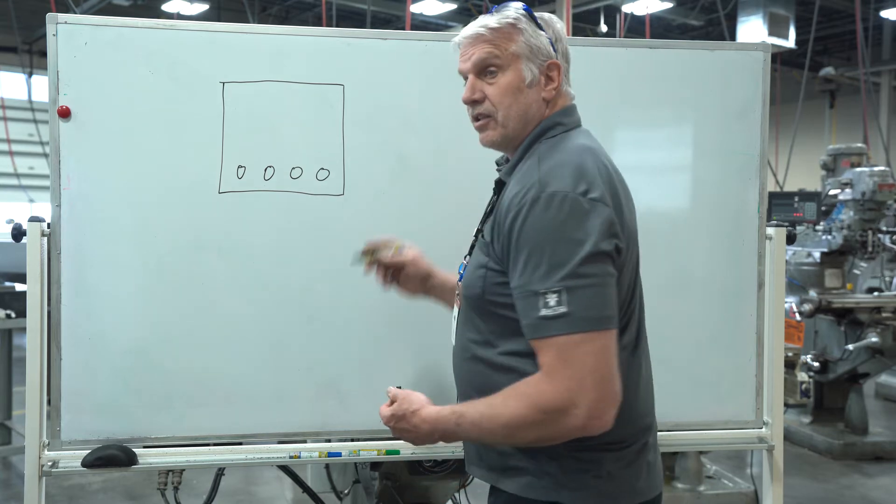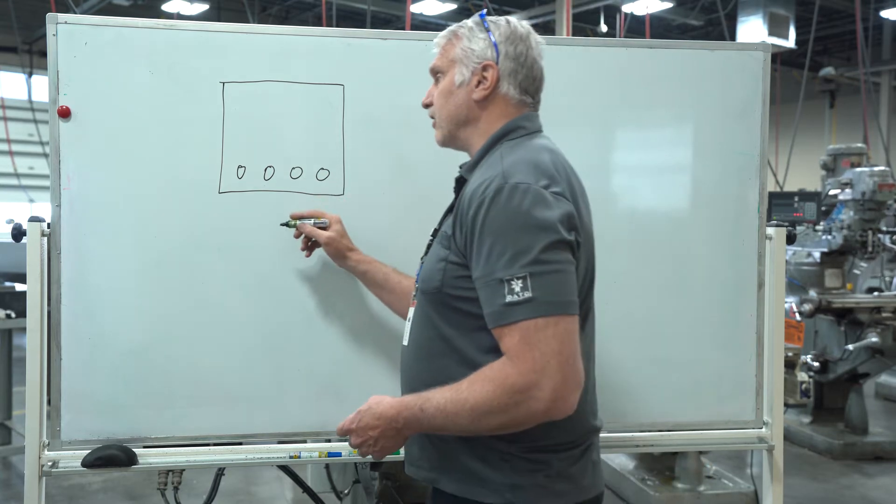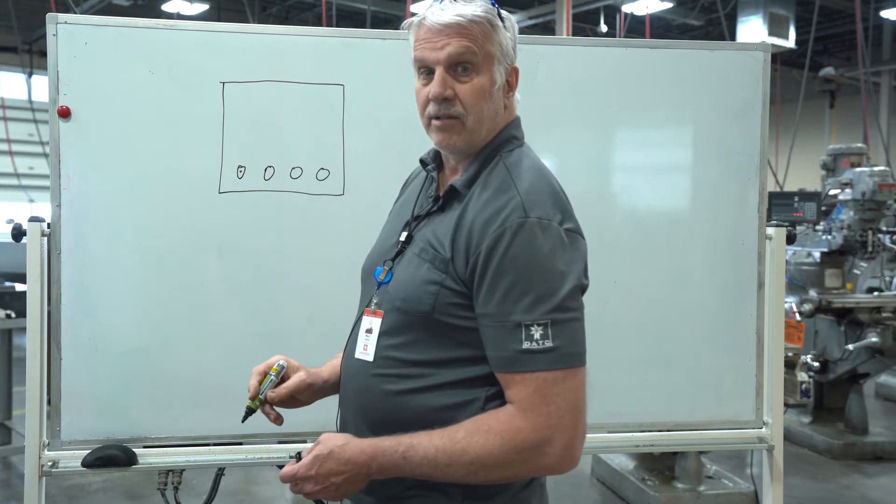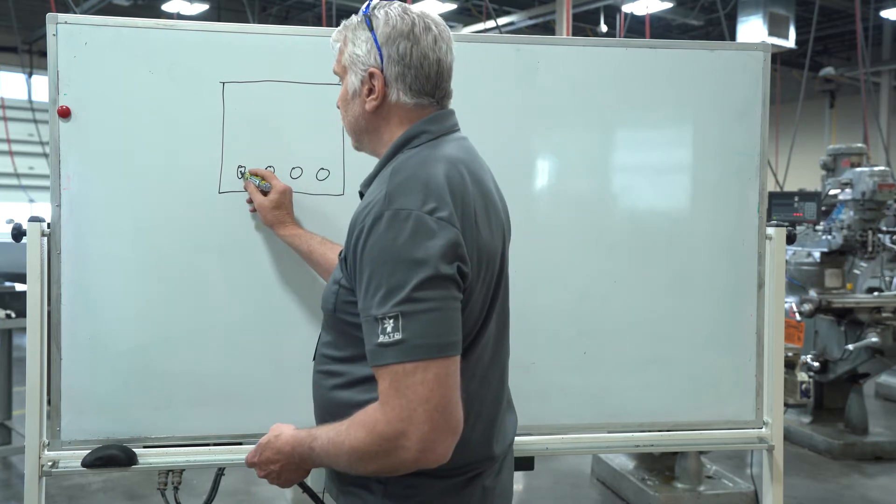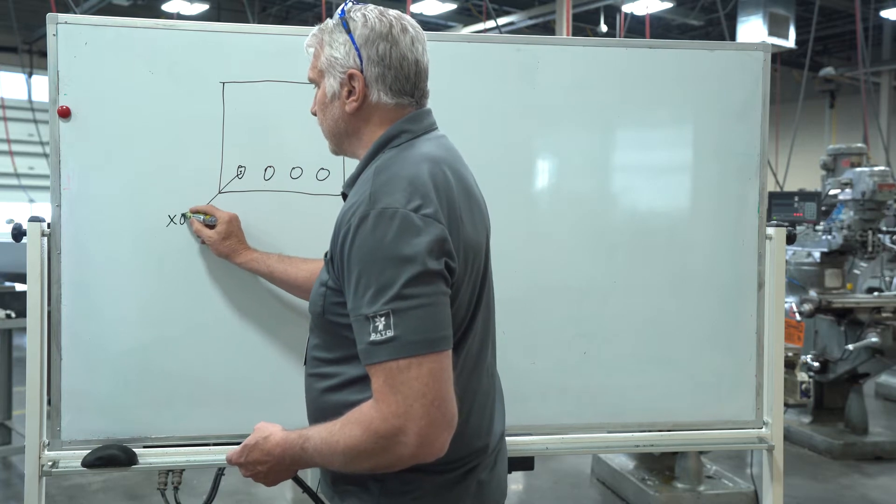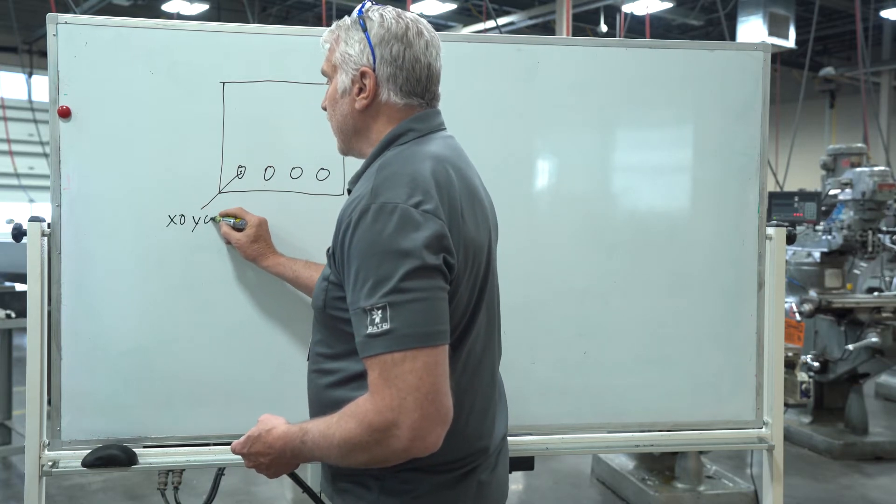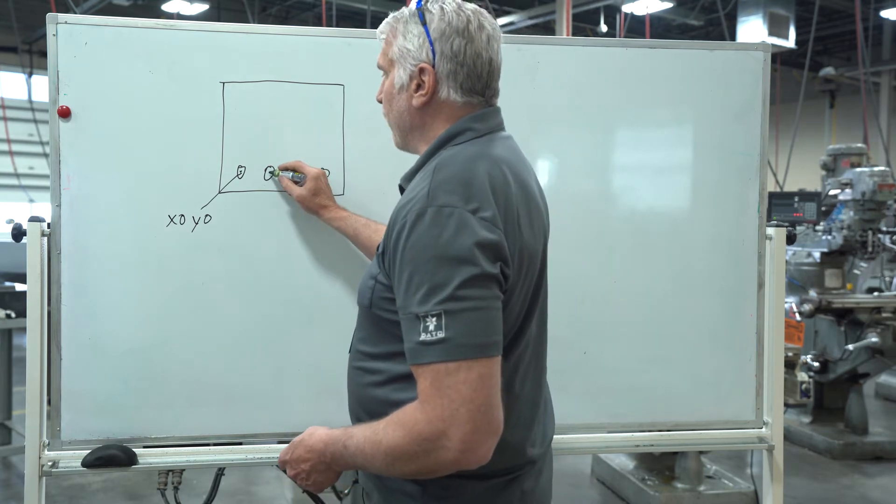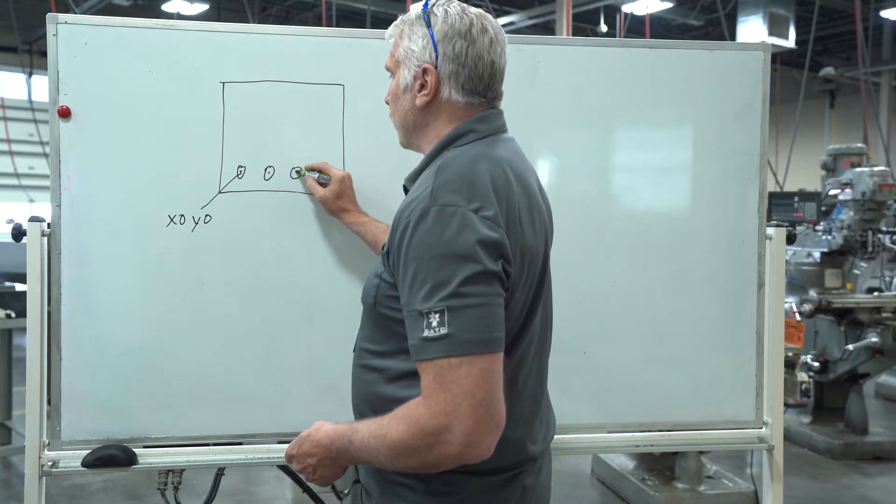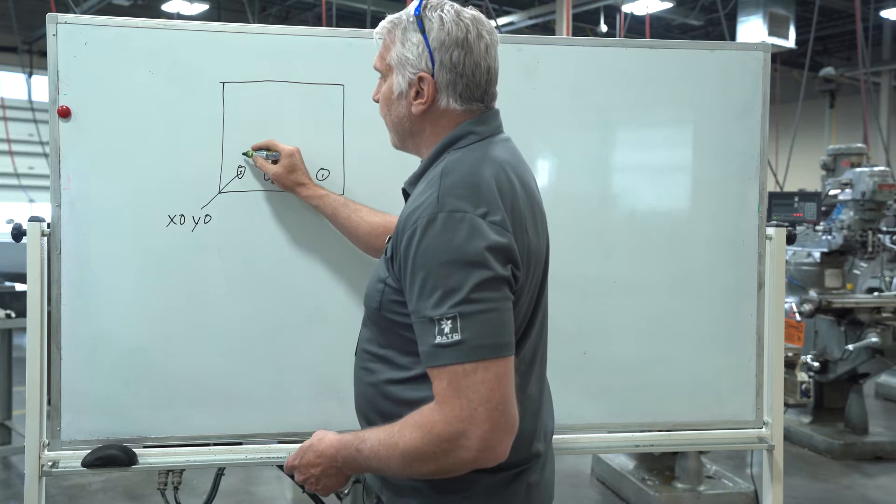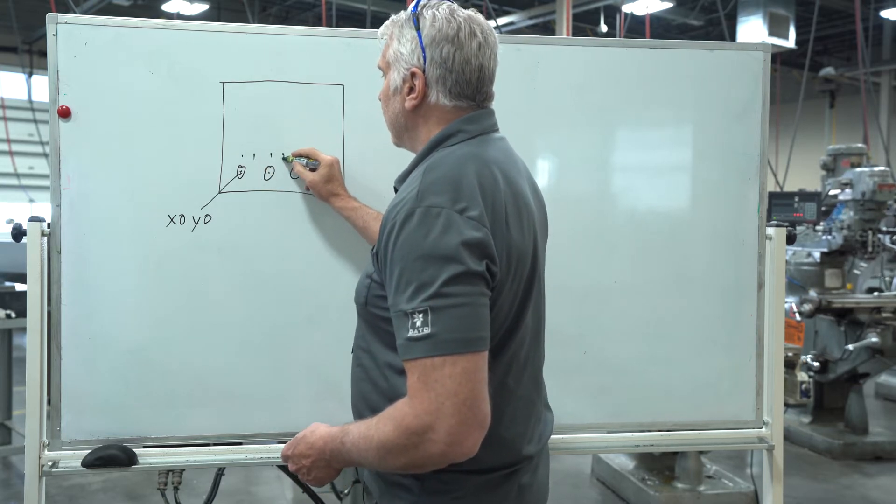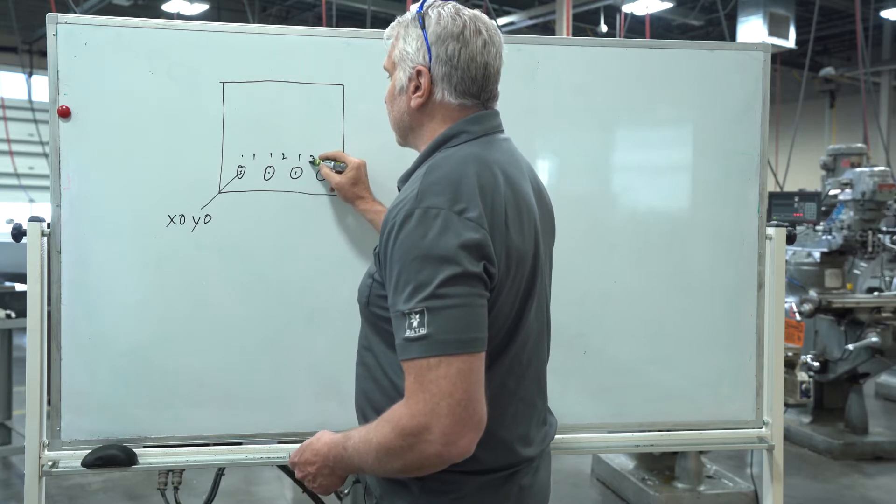The very first thing we're going to do is know our distances. This point right here, we're going to call X zero, Y zero. So we'll have X zero, Y zero, and Z zero is going to be the top of the part. Then we have another hole right here and one right here and one right here. From here to here is one inch, from here to here is another inch, so two inches, and from here to here is three inches.